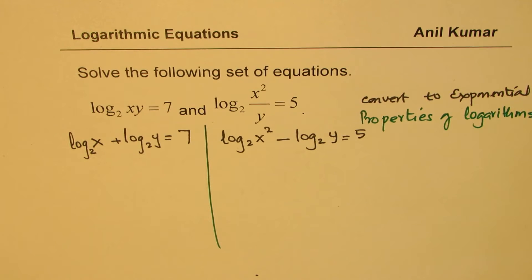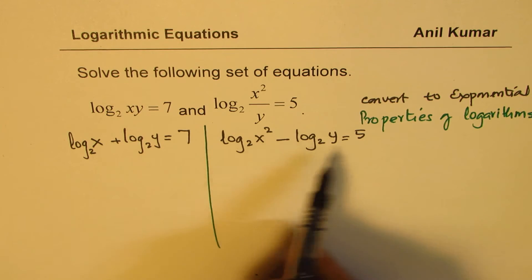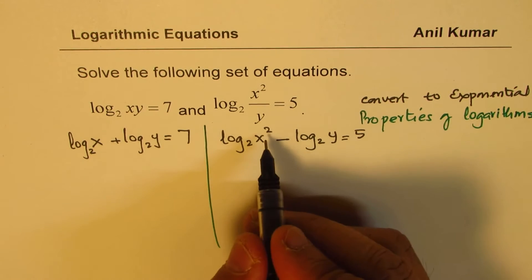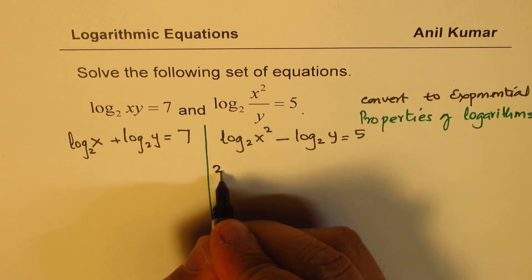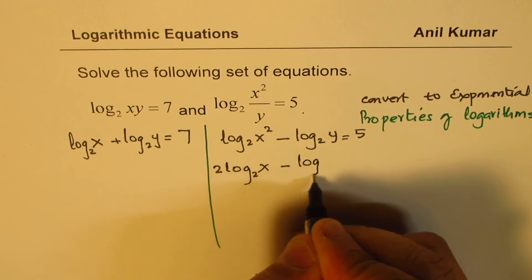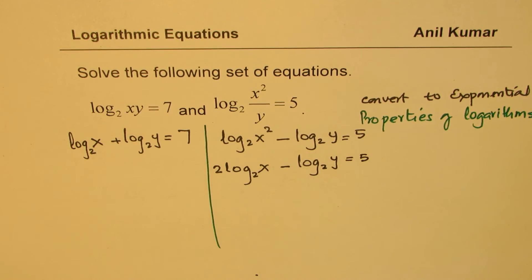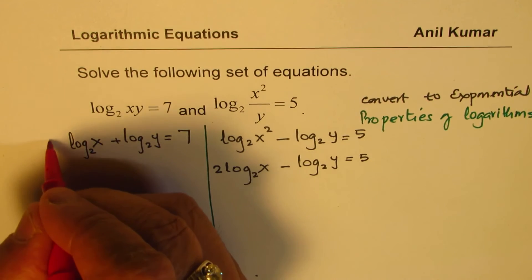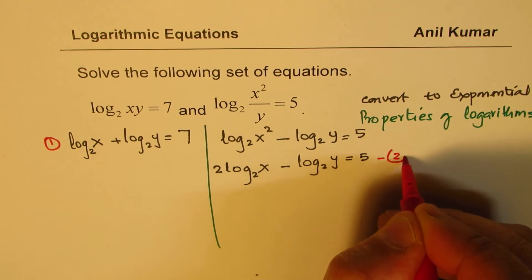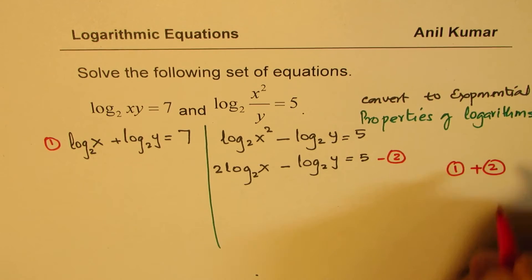Do you see something which can be cancelled? Yes of course. Log base 2 of y could be cancelled if I add these two. Let me apply the power rule to this equation and rewrite this as 2 times log base 2 of x minus log base 2 of y equals 5. And now we'll add the two equations. So we have equation 1 here and this is our equation 2. Now let us add equation 1 and equation 2.